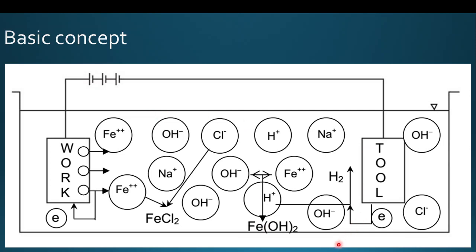The H⁺ ions combine with electrons released from the negative terminal to form hydrogen gas. In this way, material loss occurs at the anode at the atomic level. There is no deposition on the tool material in this operation — material is only removed from the workpiece.